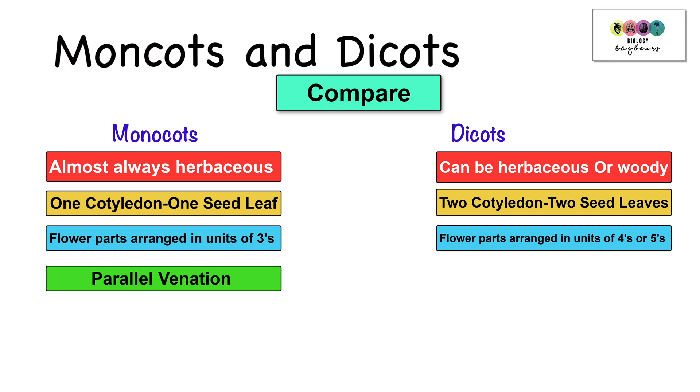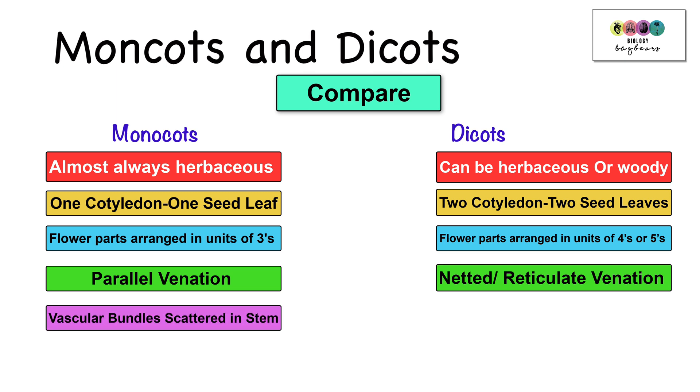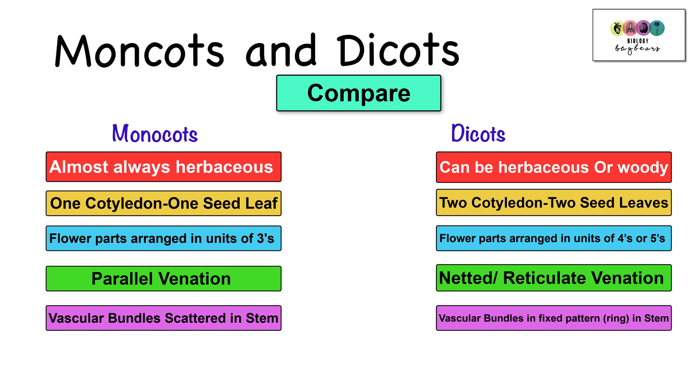When you look at the leaves of monocots, they have parallel venation, whereas in dicots, they have netted or reticulate venation. The vascular bundles are scattered in the stem of the monocot, whereas in the dicot, they're in a fixed arrangement, usually a circular arrangement around the edge of the stem.